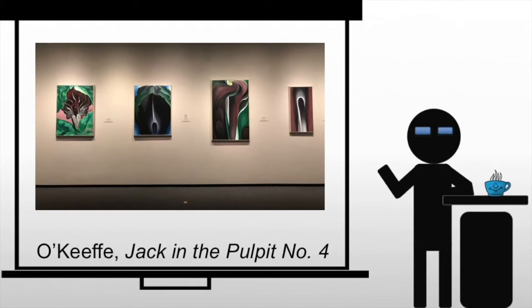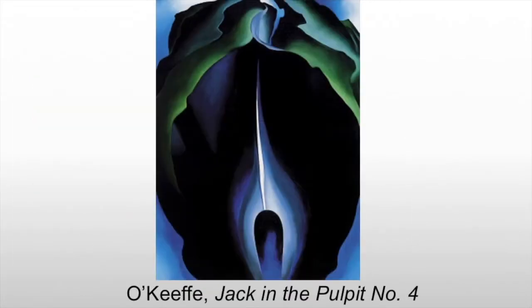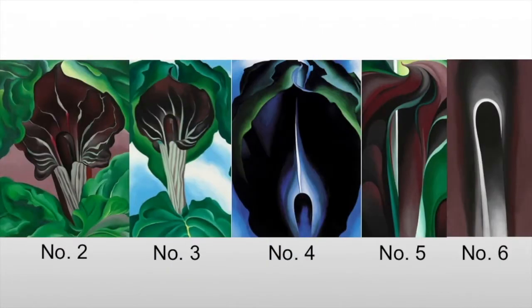When it comes to her flowers, the example we're going to work with is going to be Jack in the Pulpit number four. Now first I want to call your attention to the name of the piece — Jack in the Pulpit number four. It is very mechanical, and there's a reason for that. It's actually part of a larger series. We will see Jack in the Pulpit one through six, and with each depiction she gets closer into one element of the flower, abstracting it simply by zooming into this singular element.